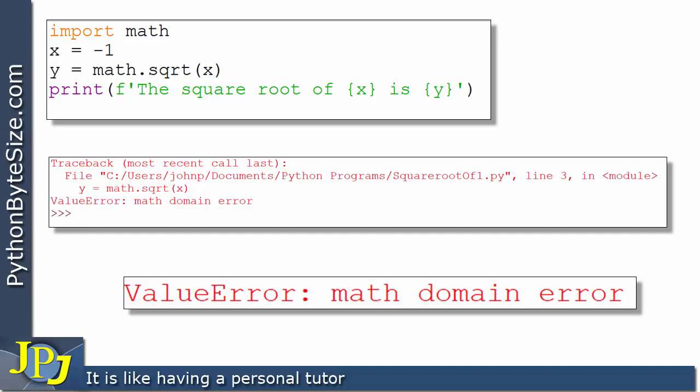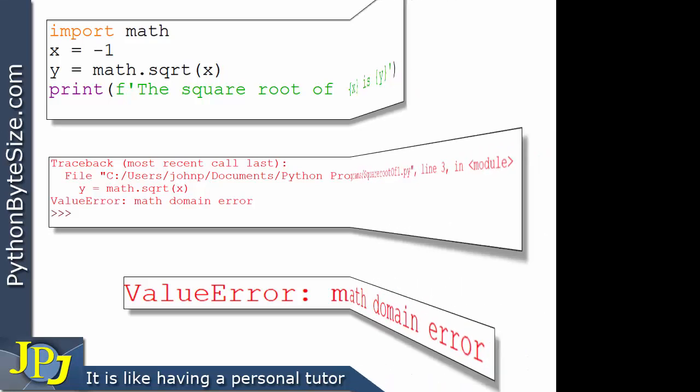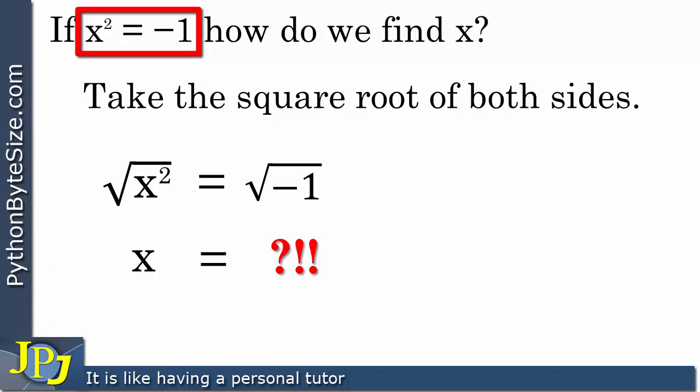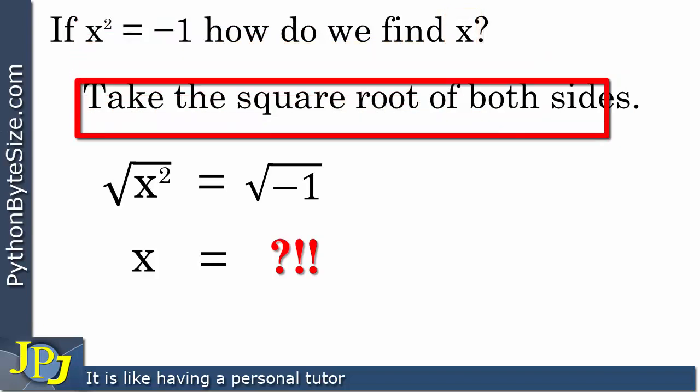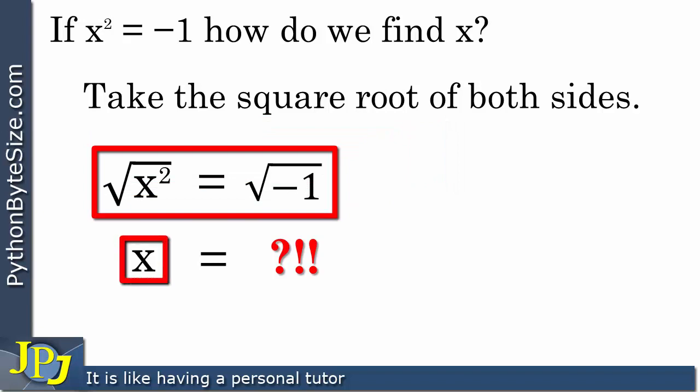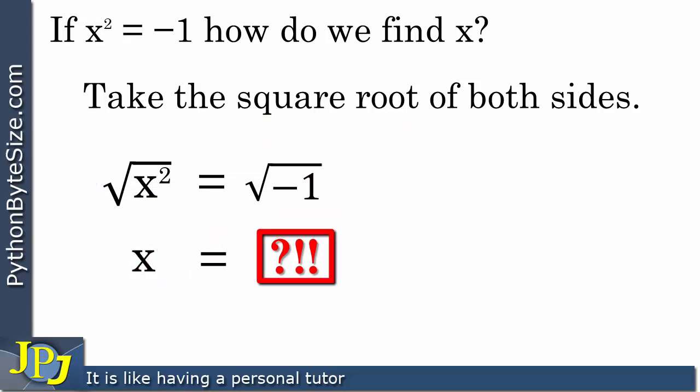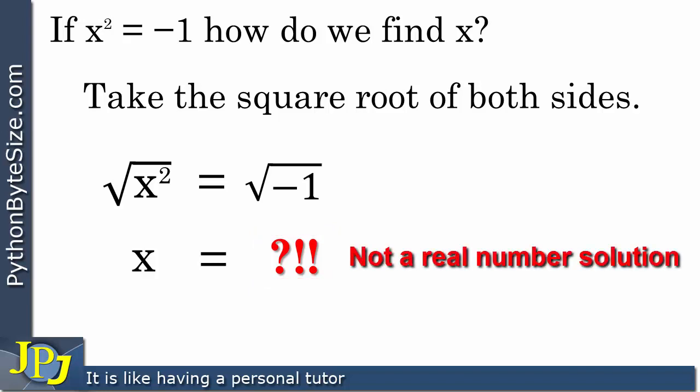If you're unsure about what I've just described, you may want to reflect back on the previous couple of videos in this playlist on complex numbers. In the previous video we looked at x squared equals minus one and we went on to ask how do we find x. We showed that we could take the square root of both sides and we would end up with a number that I was unable to find — I can't find a real number such that when that real number is multiplied by a copy of itself it gives me minus one. Consequently we can say that there is not a real number solution.